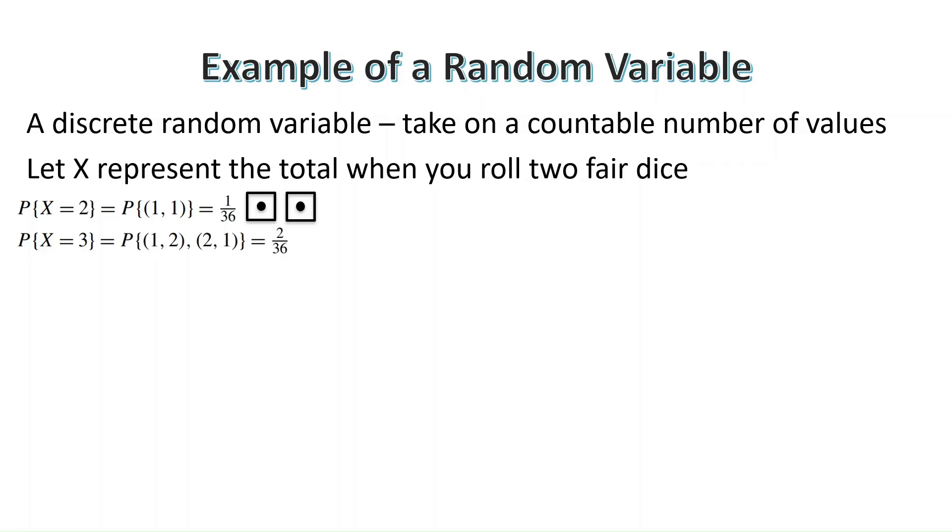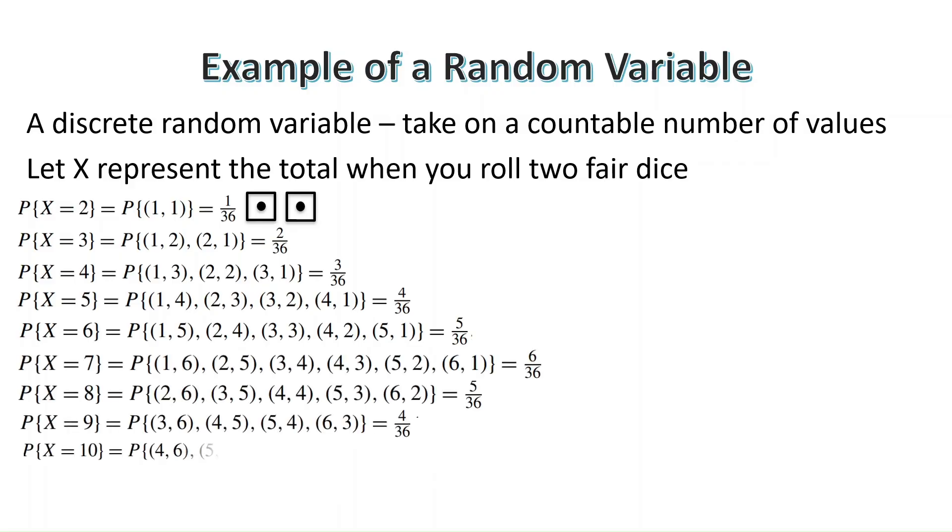For x equal to 3, we have probability 2 over 36. It's 2 because there's only two possible rolls that can give you a sum of 3. That's if you roll a 1 and a 2 or a 2 and a 1. We can then calculate the probability for the remaining values of x. The maximum value x can take on is 12 because the maximum we could ever roll is a 6 and a 6. If we then sum the probabilities for all the possible outcomes, we should get 1. Which makes sense because if we roll a pair of dice, we are guaranteed that x will only take on a value between 2 and 12.